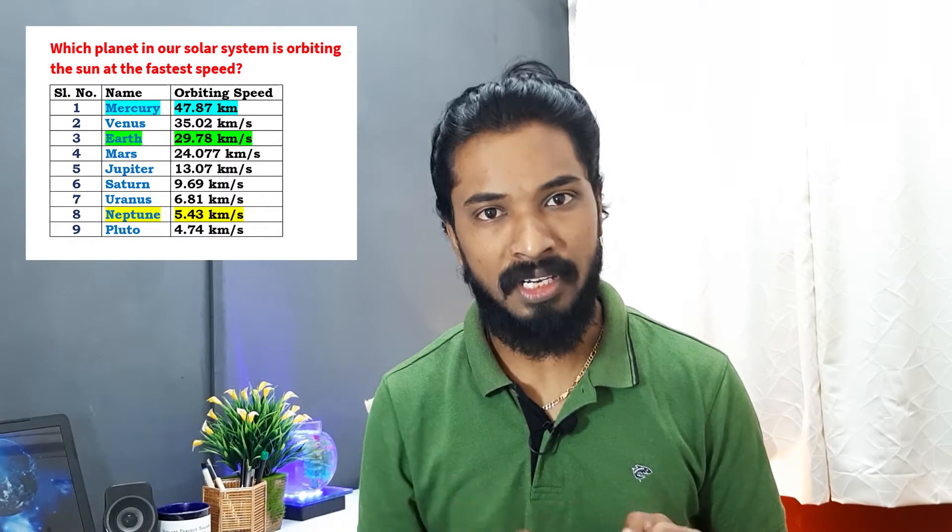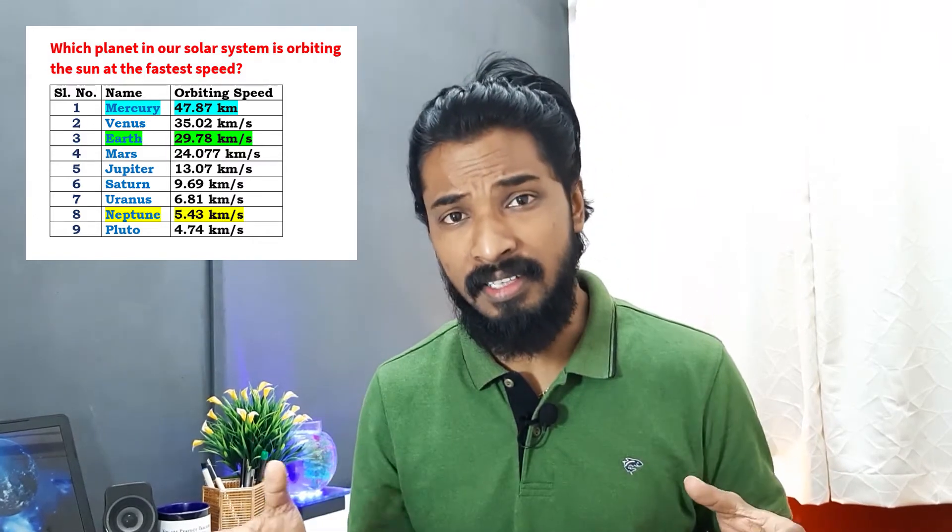Let us understand this with a simple example using our solar system. The Sun is at the center, and the first planet Mercury orbits the Sun at 47 kilometers per second. Venus orbits at 35 kilometers per second and Earth at 30 kilometers per second. If we look at the eighth planet, its speed is just 5.43 kilometers per second. This means as distance increases, the influence of gravity decreases, and the speed of an object orbiting a central mass also decreases.